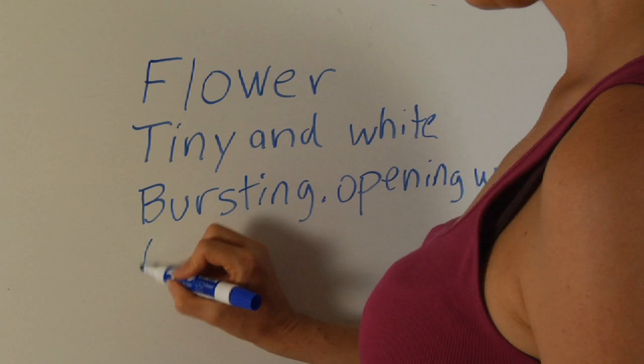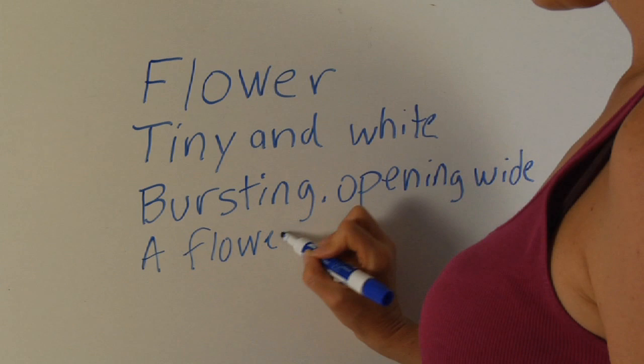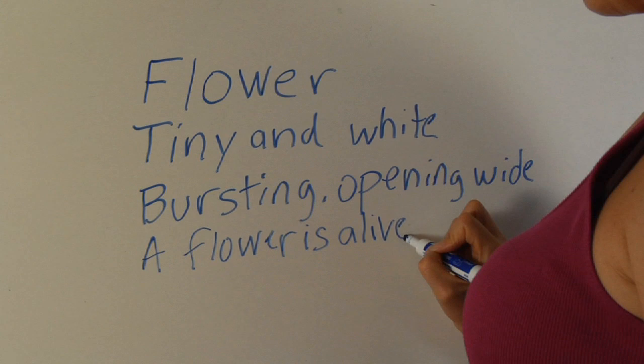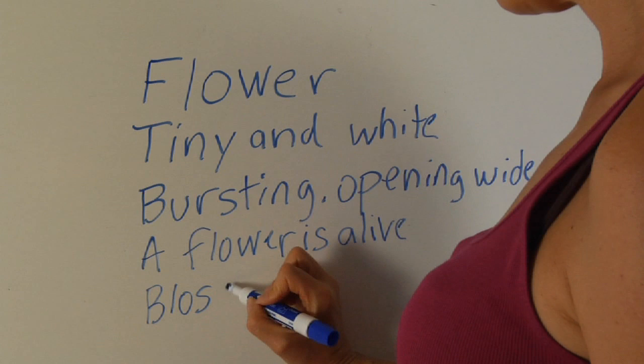The next line is a complete thought or a sentence: a flower is alive. And then our last line is going to be two syllables or one word that describes the first word: blossom.